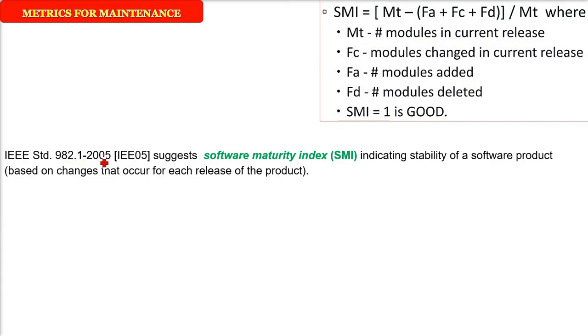So IEEE standard 982.1-2005 suggests the software maturity index. It indicates stability of a software product, and this is based on the changes and modifications that occur for each version or release of the product. The changes and modification maintenance is all about this.